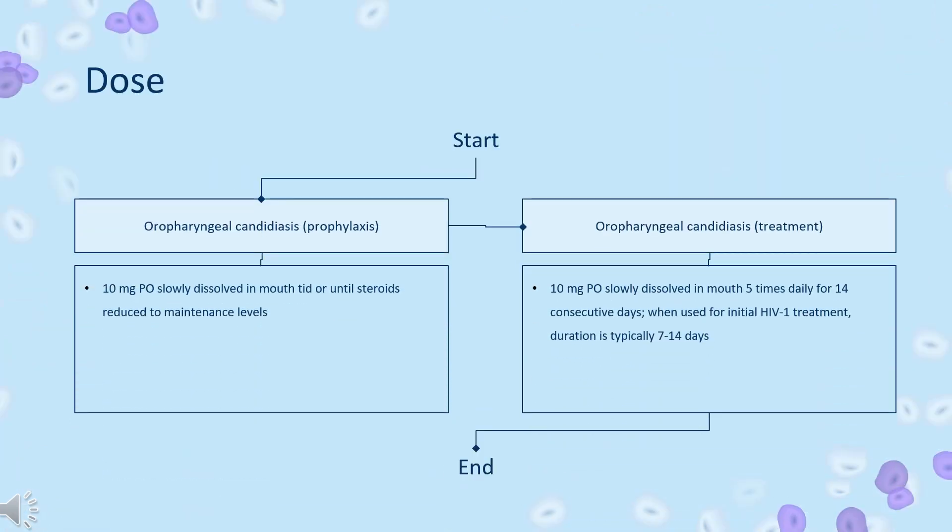Dose — Candidiasis: For oropharyngeal candidiasis prophylaxis, 10 mg PO slowly dissolved in mouth three times daily (TID), or until steroids are reduced to maintenance levels. For oropharyngeal candidiasis treatment, 10 mg PO slowly dissolved in mouth 5 times daily for 14 consecutive days; when used for initial HIV-1 treatment, duration is typically 7–14 days.